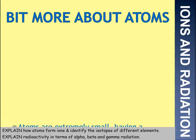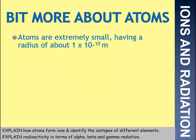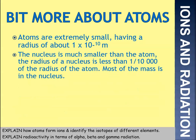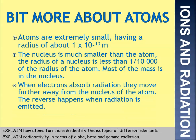Quick recap on atoms: atoms are really, really small — radius about 1×10⁻¹⁰ metres. The nucleus is much smaller than the atom itself; the radius is less than one ten-thousandth of the radius of the atom, and most of the mass of the atom is in the nucleus, so it's really concentrated. When electrons absorb radiation, they move further away from the nucleus, and when radiation is emitted, the opposite happens.